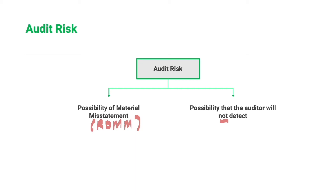In assessing audit risk, we can assess it in quantitative terms — for example, as a percentage such as 100%, 50%, or 10% — or in non-quantitative terms such as high, moderate, or low risk. In general, auditors must plan so that audit risk is limited to a level low enough to issue an opinion confidently, without undue risk that the financial statements may be materially misstated. However, audit risk cannot be reduced to zero due to the inherent limitations of audit.